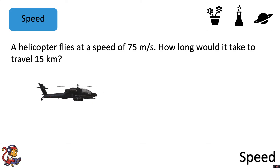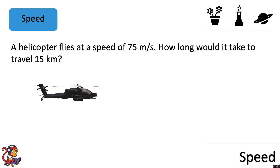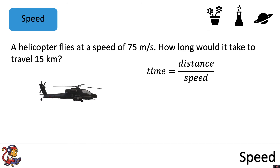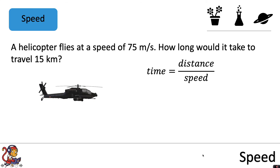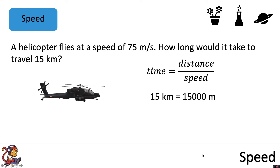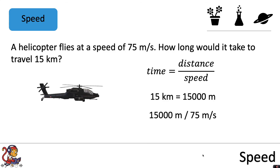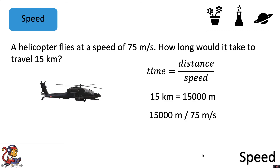This last question says: a helicopter flies at a speed of 75 meters per second — how long would it take to travel 15 kilometers? We have a speed and a distance and need to work out time, so we use the equation time equals distance divided by speed. We first convert 15 kilometers to meters: 15 multiplied by a thousand gives us 15,000 meters. So 15,000 meters divided by 75 meters per second gives us a time of 200 seconds.